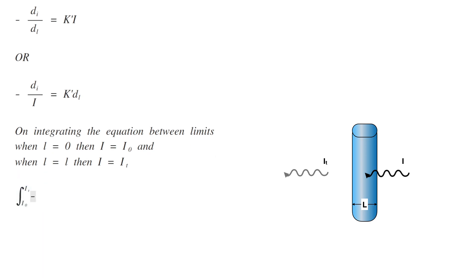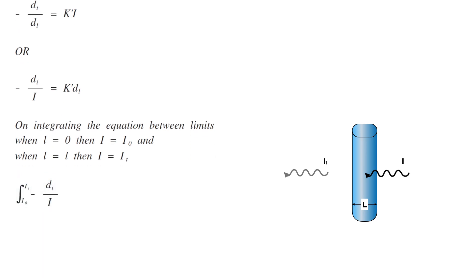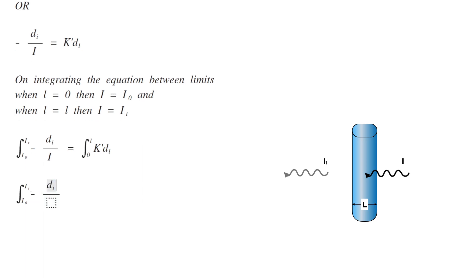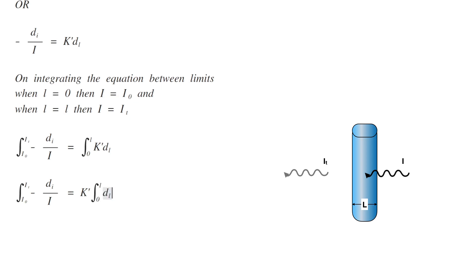So integration of minus dI by I from the limit I₀ to Iₜ equals integration of K' dL from the limit 0 to L, which can be rearranged as integration of minus dI by I from the limit I₀ to Iₜ equals K' integration of dL from the limit 0 to L.